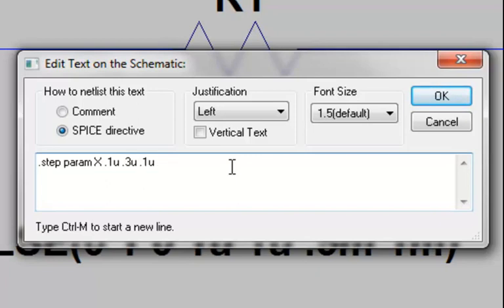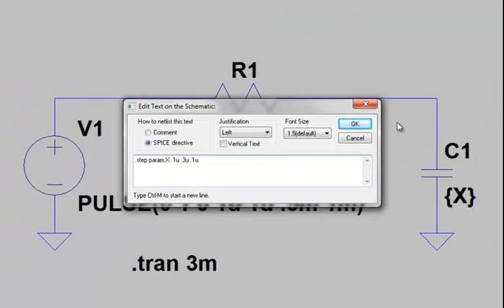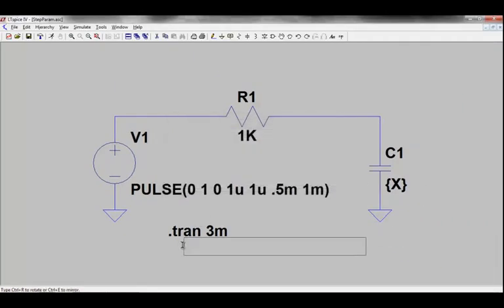So in essence, LTSpice will do a single simulation run, and the capacitance will vary from 0.1 to 0.2 to 0.3 microfarads. Once you're happy with your dot step statement, you can then click OK and place it into your schematic.